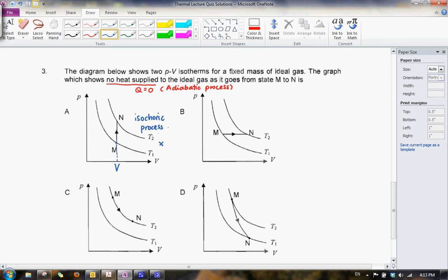Let us look at option B now. For option B, we can see that this is a horizontal line, and it means that P is actually constant, so this is actually an isobaric process, and therefore B is also eliminated.